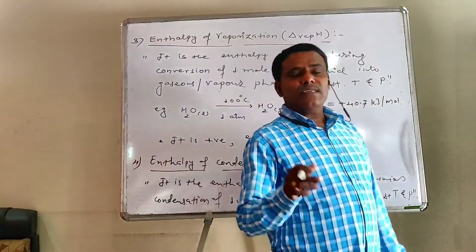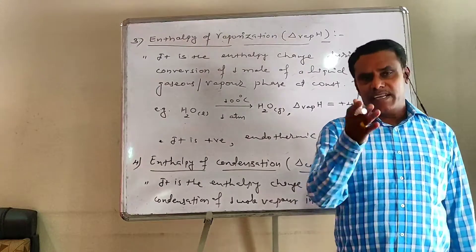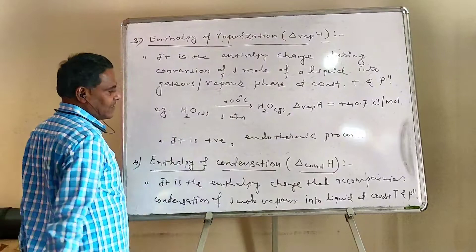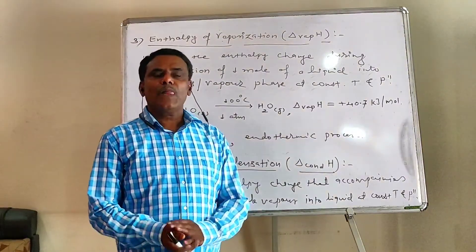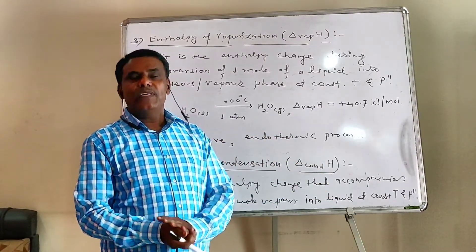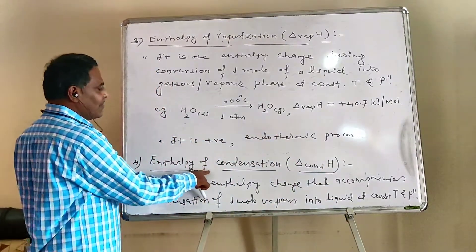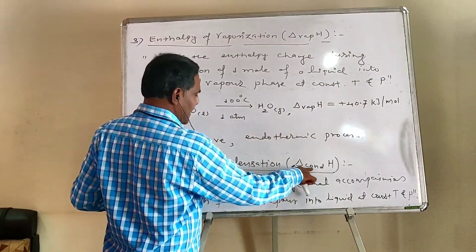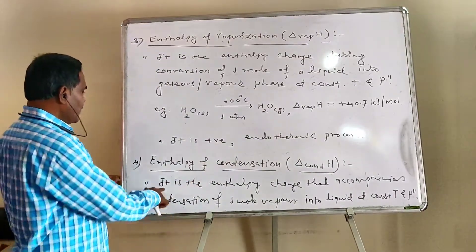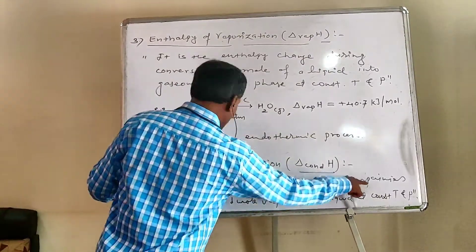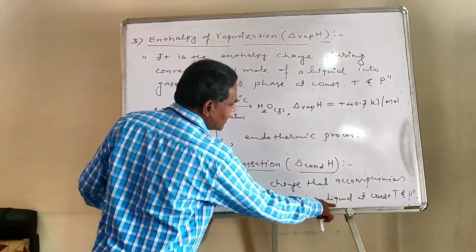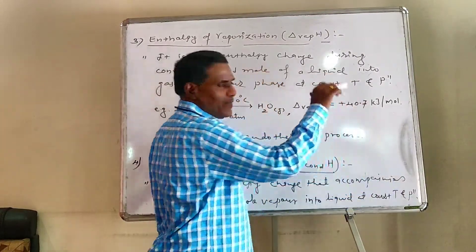Can you guess the next type of enthalpy change? Opposite to vaporization, it is condensation — vapor is condensed and converted back into liquid. Enthalpy of condensation, represented by delta condensation H, is the enthalpy change that accompanies condensation of one mole of vapor into liquid at constant temperature and pressure.